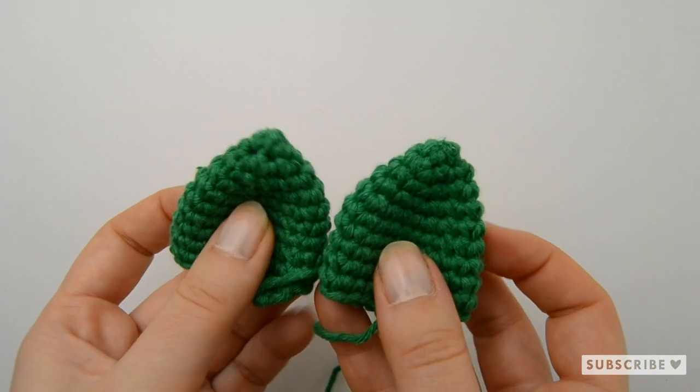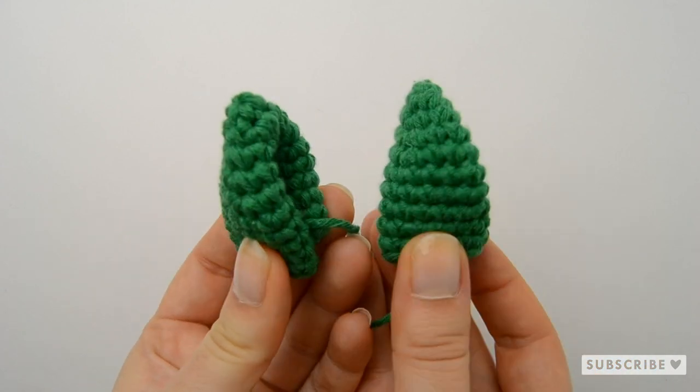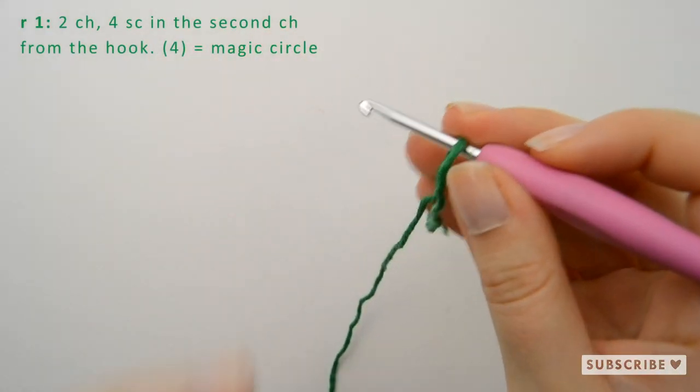In this video I will show you how to crochet this cute pair of tiny ears. So let's start off with a magic circle with four single crochets this time.